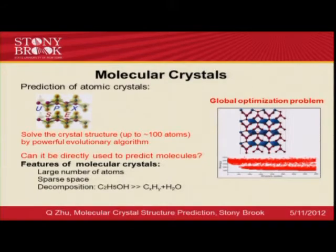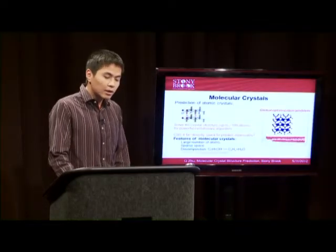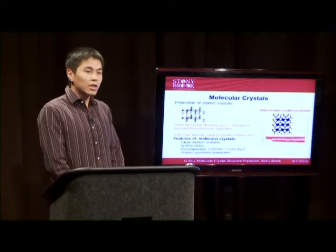Also, most organic compounds are not dynamically stable. This means that if we start from a given chemical formula — for example, C2H5OH, the chemical formula of ethanol — we do the prediction and might end up with a mixture of hydrocarbon compounds and water, but no longer ethanol molecules. Last but not least, molecular compounds tend to have a pretty uneven distribution of symmetry operations.